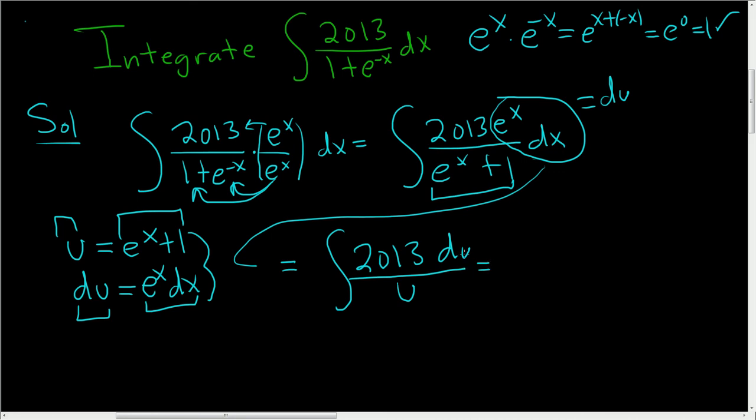This integrates. The integral of du over u is the natural log of the absolute value of u. So we have 2013, natural log, absolute value of u, plus a constant.